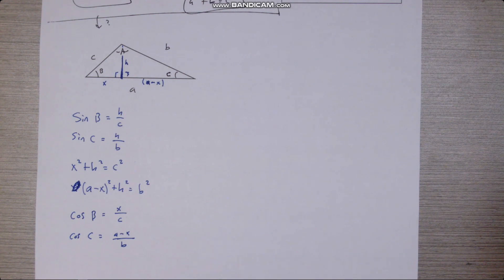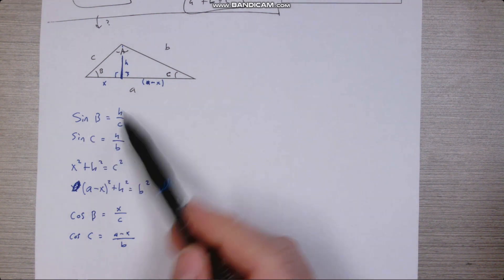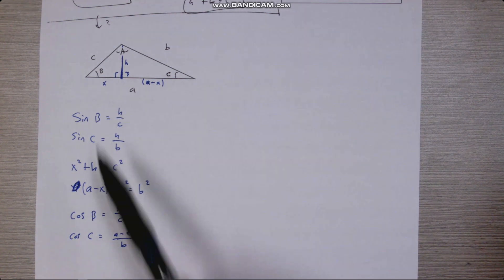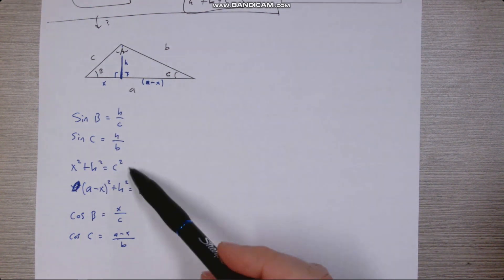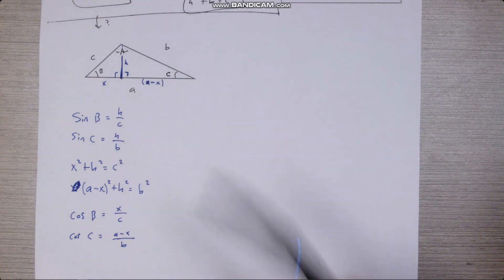Okay, here's what I came up with. All I did was I used some simple SOH CAH TOA things to describe sine and cosine of this angle and this angle, and I used the Pythagorean theorem to do both of those right triangles.